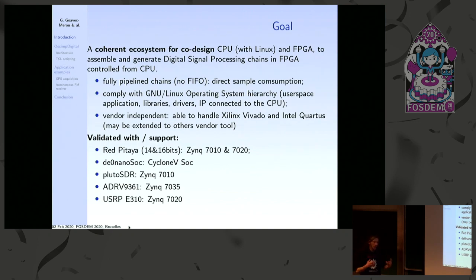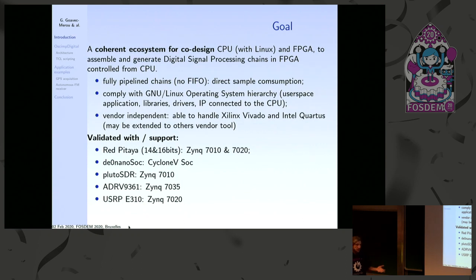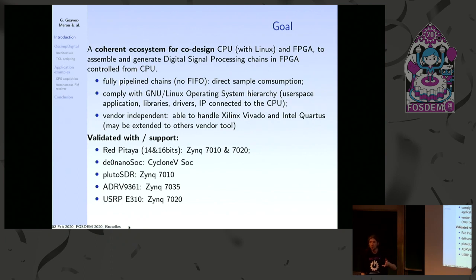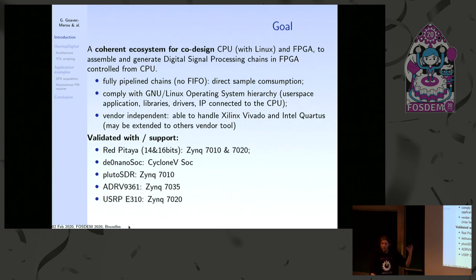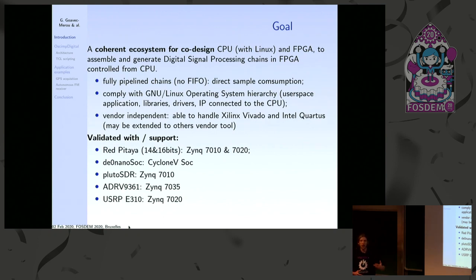We try as much as possible to avoid using RAM to simplify the design. Since we use a CPU with Linux, this ecosystem complies with the structure of an operating system architecture. We have IPs connected to the CPU to communicate with respect to the system. We provide drivers for these IPs, and for some IPs with complex configurations, we provide a library to avoid duplicating pieces of code.